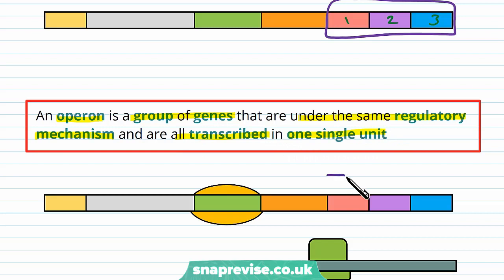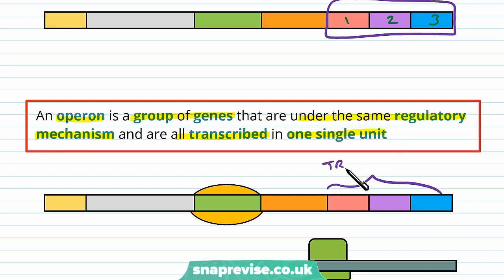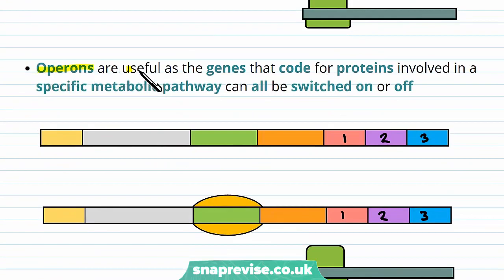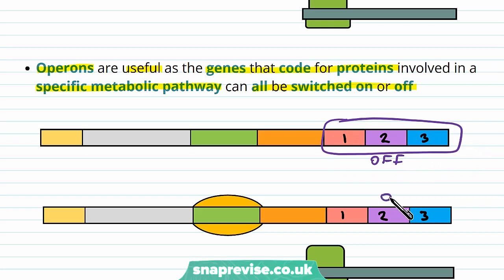Instead of just transcribing one of these genes at a time and separately, all of these genes are transcribed together. These genes might be grouped together because they have similar roles — usually if one is needed, then they're all needed, so they all get transcribed in one go. Operons are useful because the genes that code for proteins involved in a specific metabolic pathway can all be switched on or off together, rather than having to switch on one at a time.